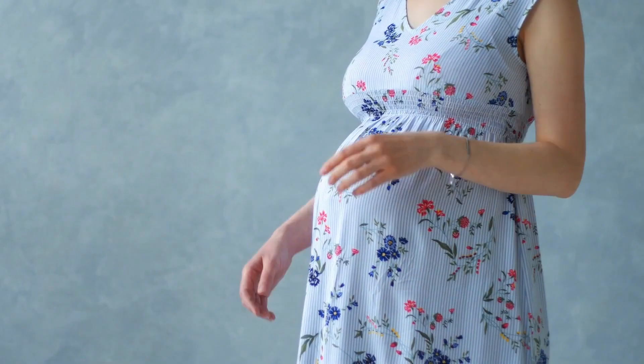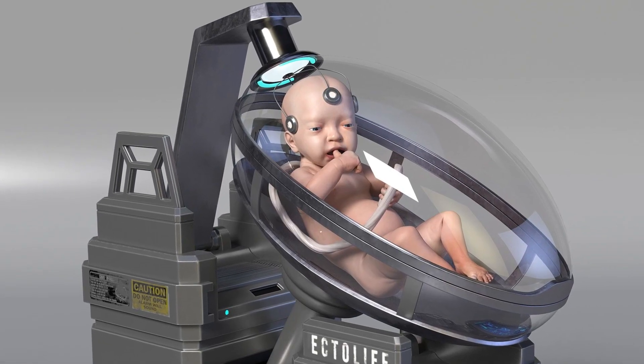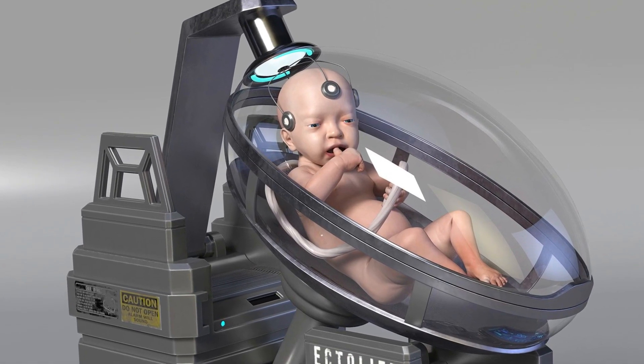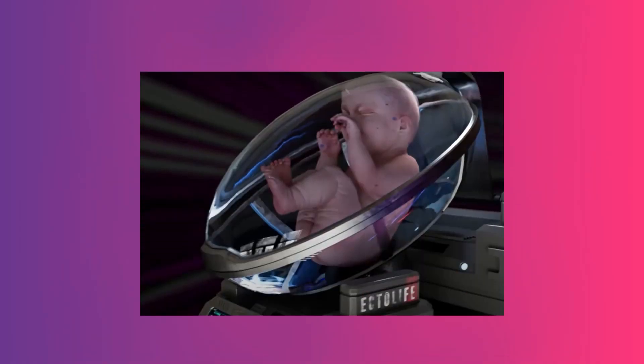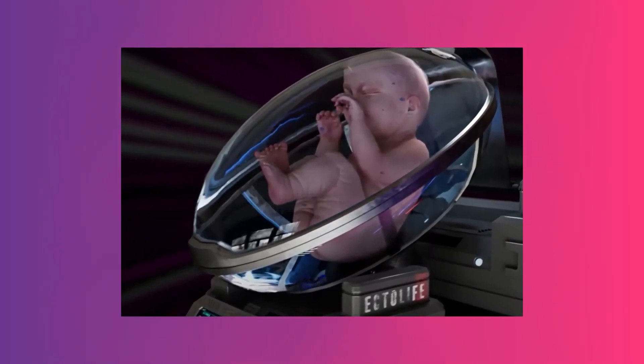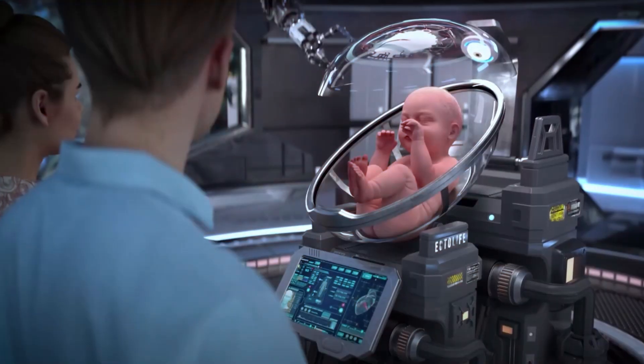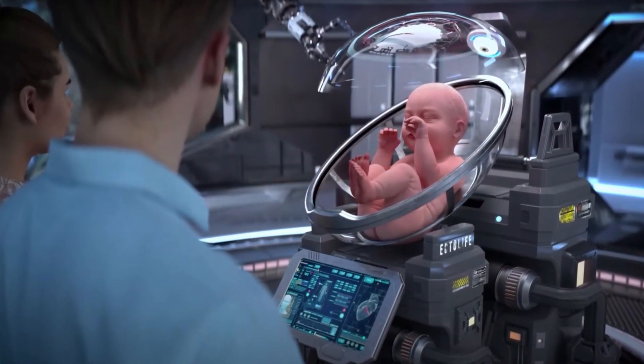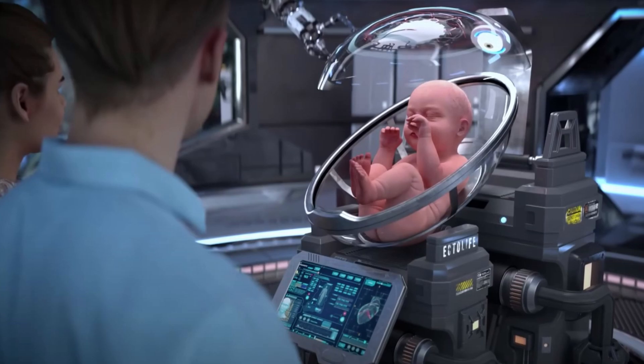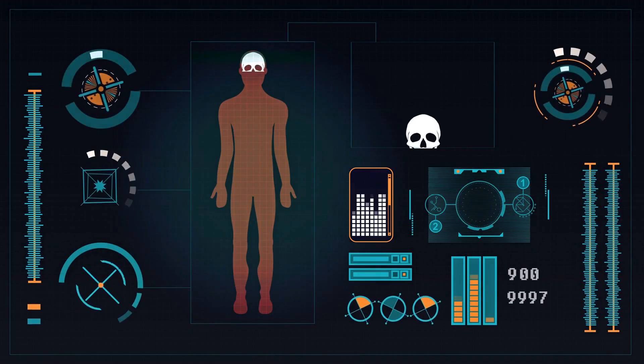Ectolife. What if babies could grow outside the human body? That's the mind-bending concept behind Ectolife, a facility with artificial wombs. While ethically complex, it raises fascinating possibilities. Could it help premature babies, or offer a solution for those unable to carry a pregnancy? It pushes the boundaries of what we think is possible and forces us to examine our definitions of family and parenthood.